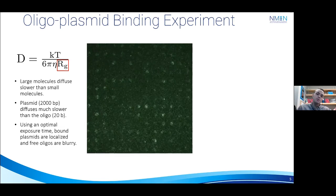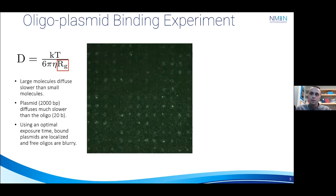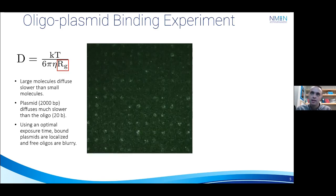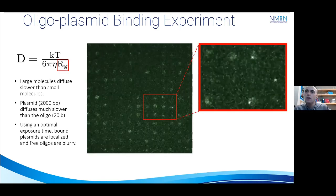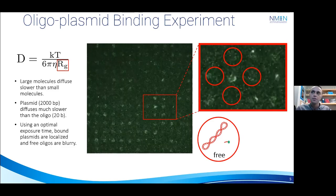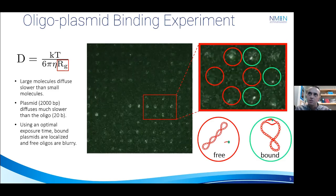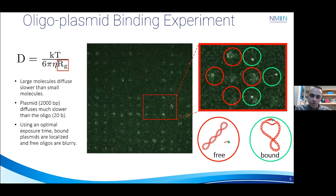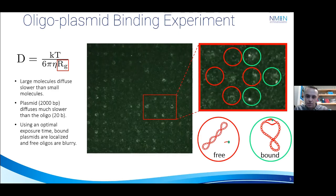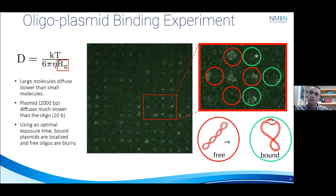And so here, to demonstrate this, I've shown a movie of an array of CLICK microwells containing plasmids and oligos. And if we zoom in on some representative wells, you'll notice that these blurry images correspond to free oligos, while these localized crisp images correspond to bound oligos. And by counting the number of these bound complexes, we can effectively measure how unwinding changes under a number of conditions.